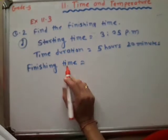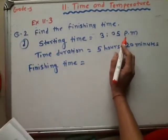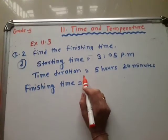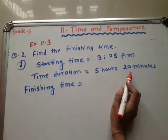See, again, here starting time is 3 o'clock 5 minutes. This is in PM. Then we find here time duration. Now, already time duration is given, that is 5 hours 20 minutes.